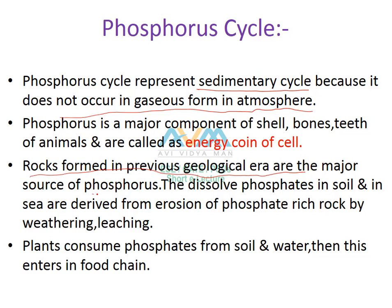Rocks formed in the previous geological era are the major source of phosphorus, and phosphorus is present there in the form of sediment. The erosion of phosphorus occurs during the process of weathering of these rocks. This eroded phosphate gets dissolved in the soil, and later on it is consumed by the plant, which is a producer, and from there the phosphorus enters into the food chain.